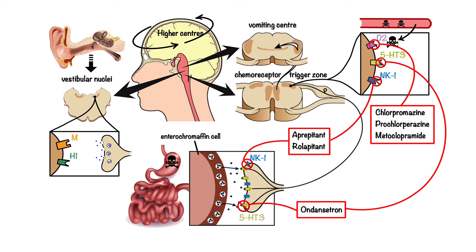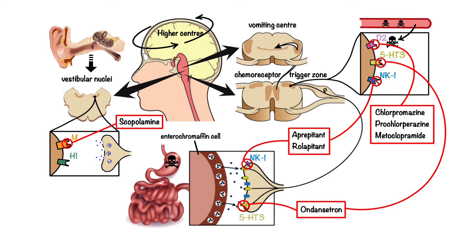This mechanism can be counteracted by anticholinergic medications such as scopolamine, which blocks the muscarinic receptors, as well as antihistamines such as diphenhydramine, dimenhydrinate, meclizine and promethazine, which block both histamine H1 and muscarinic receptors, thus inhibiting stimulatory effects of acetylcholine and histamine.